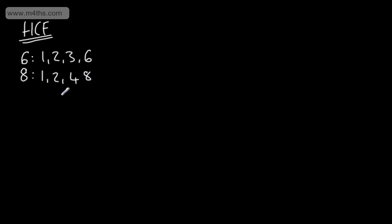To find the highest common factor, we look in both lists and we look for the largest number that appears in both lists. We can see that's 2, so we can say that the highest common factor — or the largest number that goes into both 6 and 8 — is going to be 2.